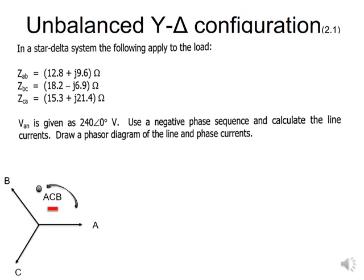The first thing I draw is the phasor diagram of all three phases in a negative phase sequence, so I can remember how the voltages are oriented. You can clearly see it written as acb, which is the same as saying cba. Rotating around the reference dot, I go through the acb sequence, confirming it is a negative phase sequence.